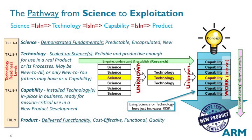Technology readiness levels — you will come across this term if you haven't already. People are starting to use it more and more. It doesn't really quite tell the truth because when something has reached the capability stage in a business, you're betting your company on it. You're not going to bet your company on something at technology readiness level four or five — it's really got to be pretty stable. So instead of going from one to nine gradually, we actually go fairly rapidly to nine, and then those levels are all assuming the science is robust enough to be used in a product context where the business is dependent on it. I like to think of it in terms of mortgages — business is about making money to allow people to have mortgages.